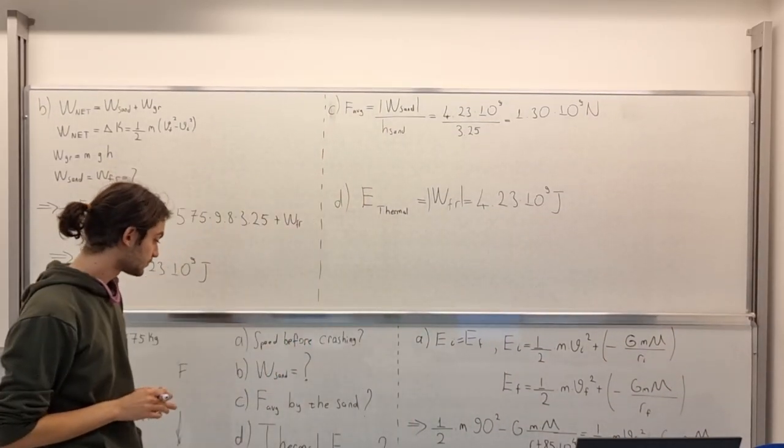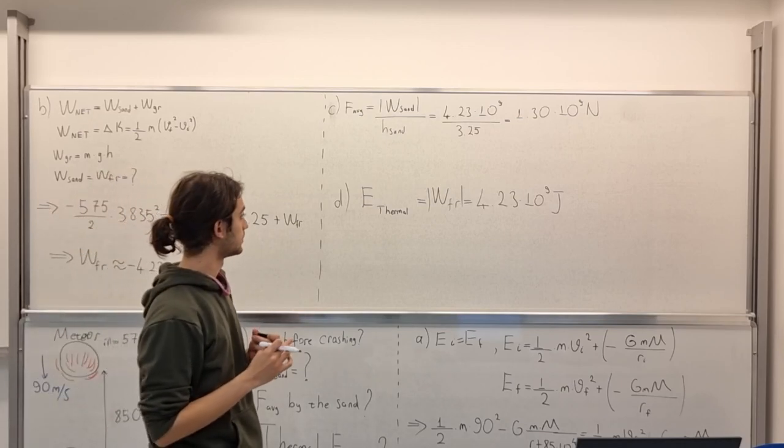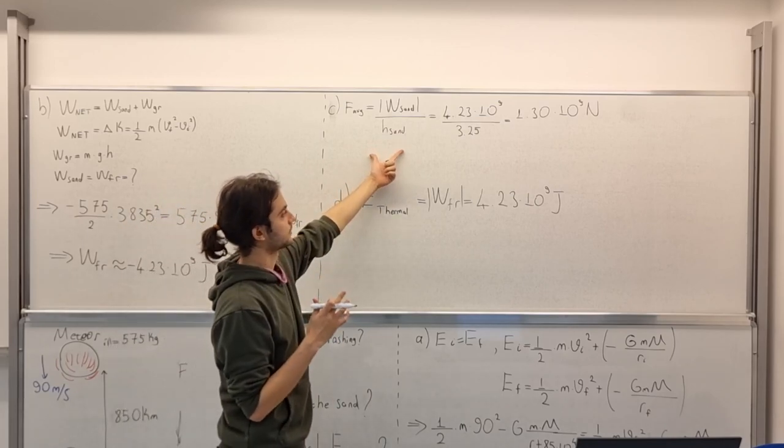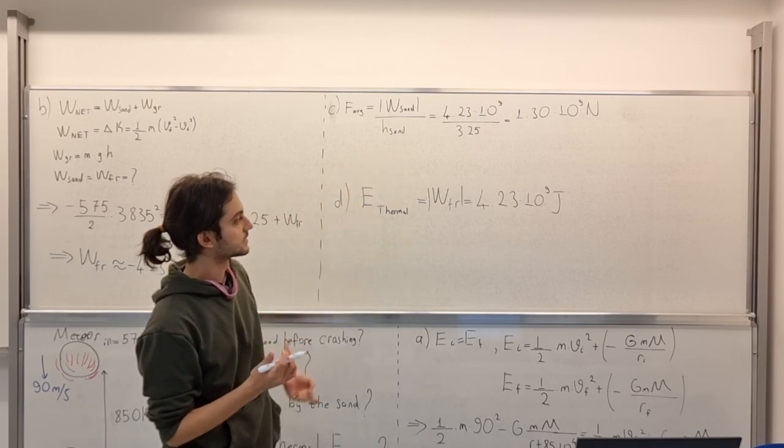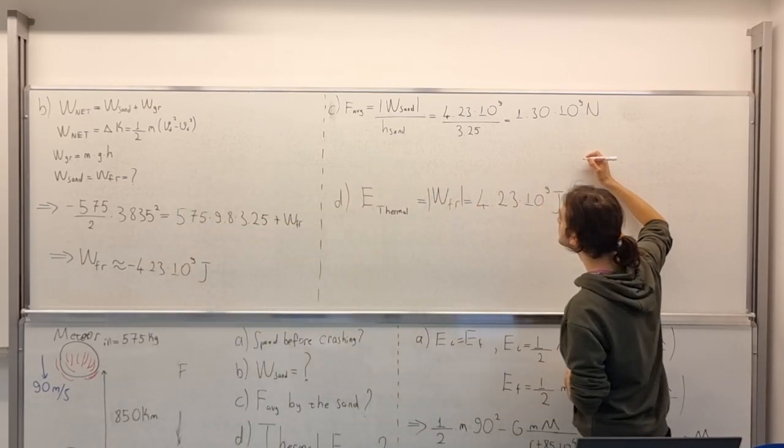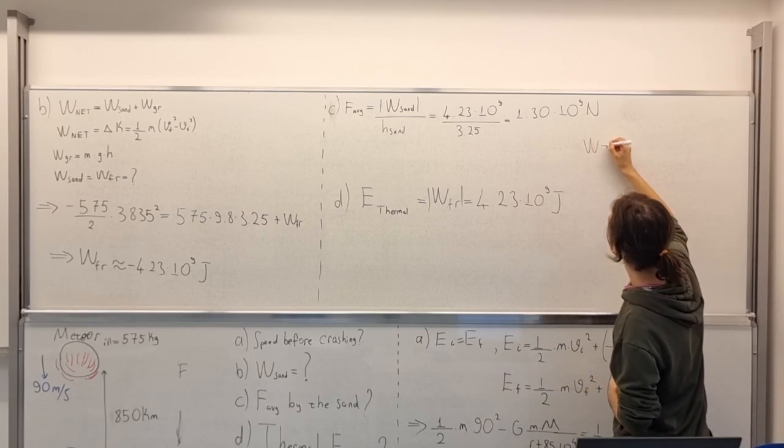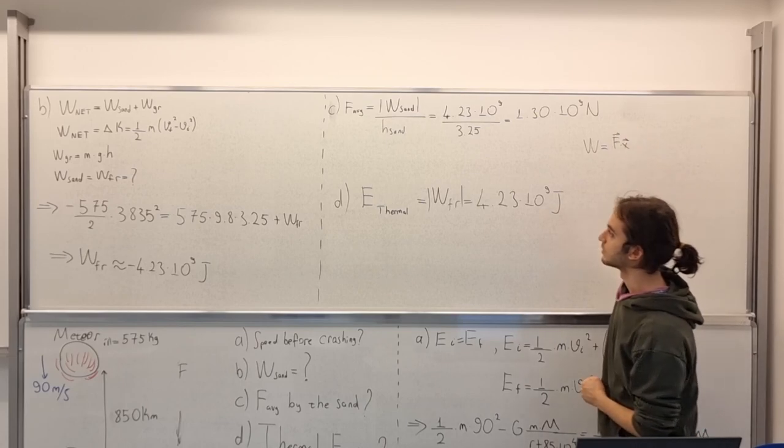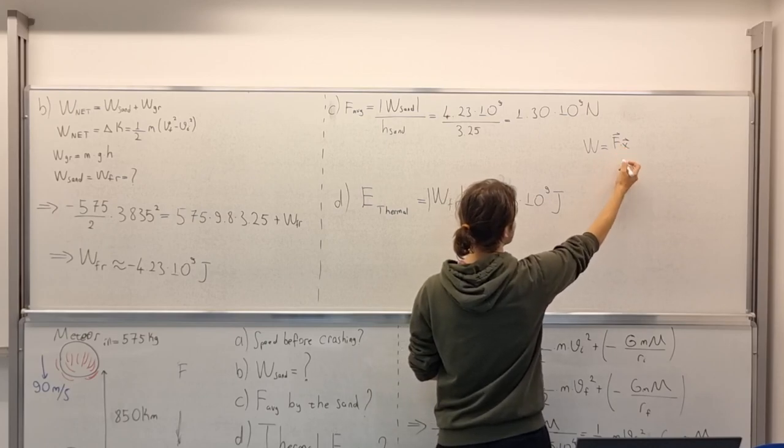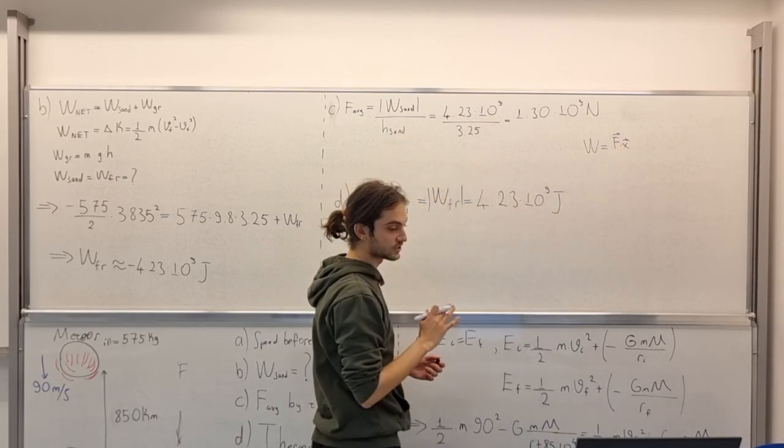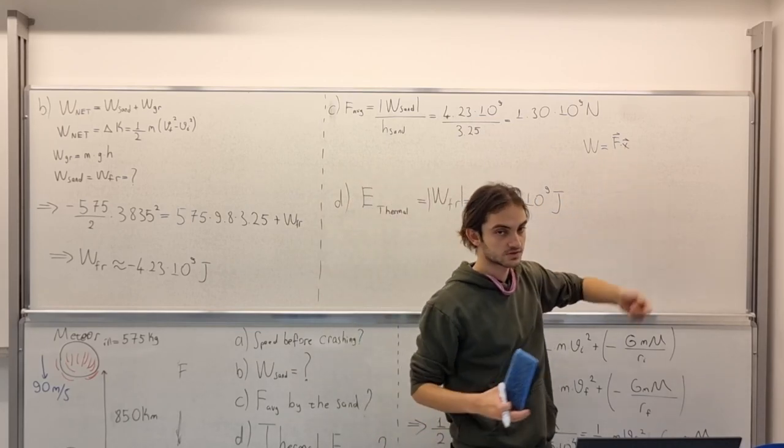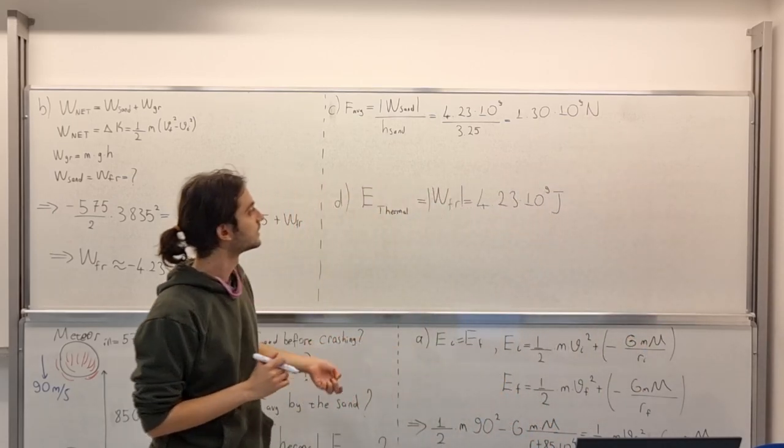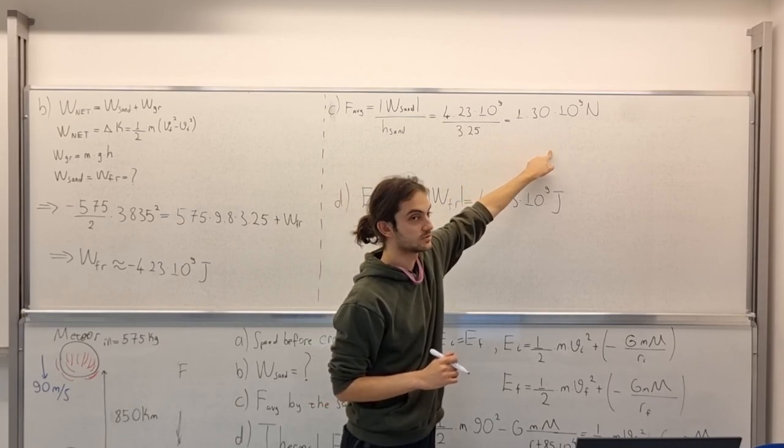In C, we need to find the average force done on the meteor exerted on the meteor by sand. Average force is just equal to this, basically. Because we have this formula. Our average force would be this. I mean, you can see the correlation here. Since these vectors are pointing in the same direction, that's all about. Then we acquire this: 1.30 times 10 to the power of 9 Newtons.